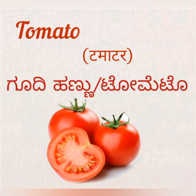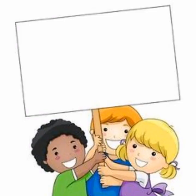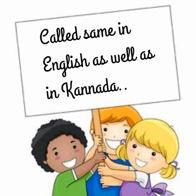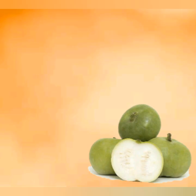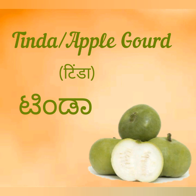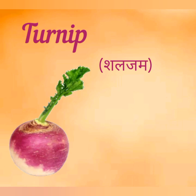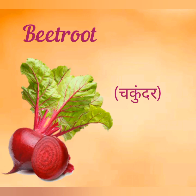Now, let's learn the vegetables which are called the same in English and Kannada. Tinda or apple gourd — tinda. Turnip — turnip. Beetroot — beetroot.